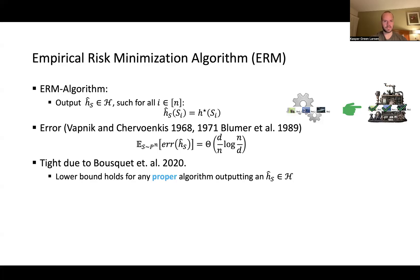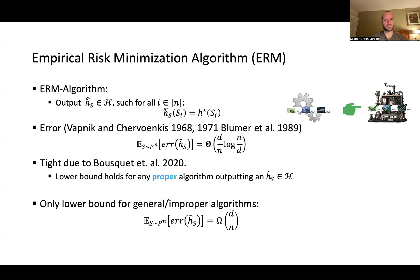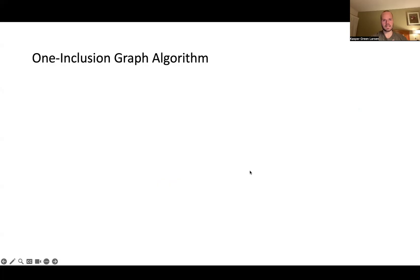One lower bound says that this bound holds for any so-called proper learning algorithm — one that outputs a hypothesis from the hypothesis set H. However, if the learning algorithm outputs something not in H (so-called improper learning), the only lower bound is Ω(d/n). So there's a gap of a log(n/d) factor between the two, and this gap has been closed by several known algorithms.